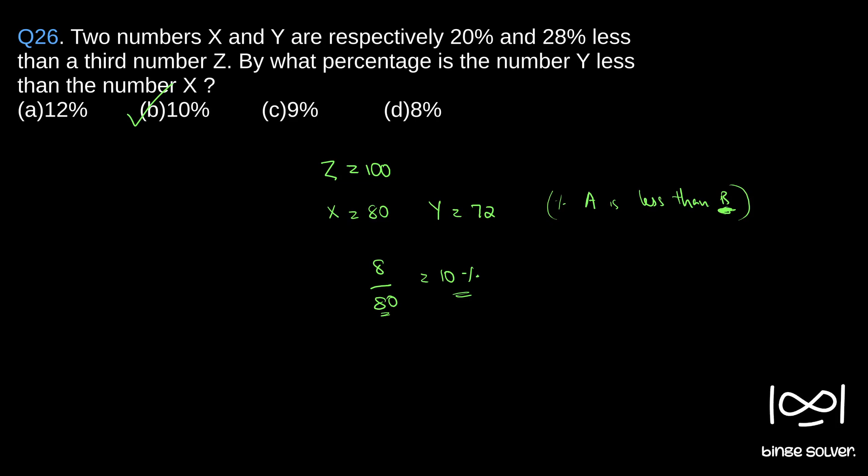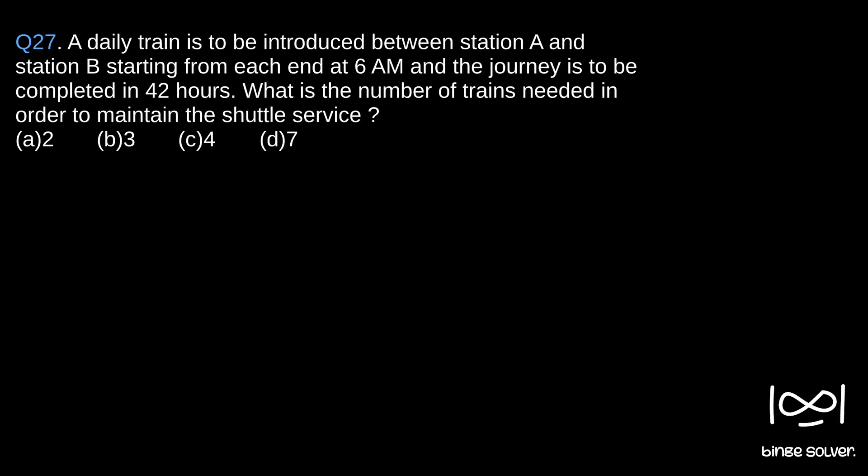Next question, question 27. A daily train is to be introduced between station A and station B starting from each end at 6 a.m. and the journey is to be completed in 42 hours. What is the number of trains needed in order to maintain the shuttle service?